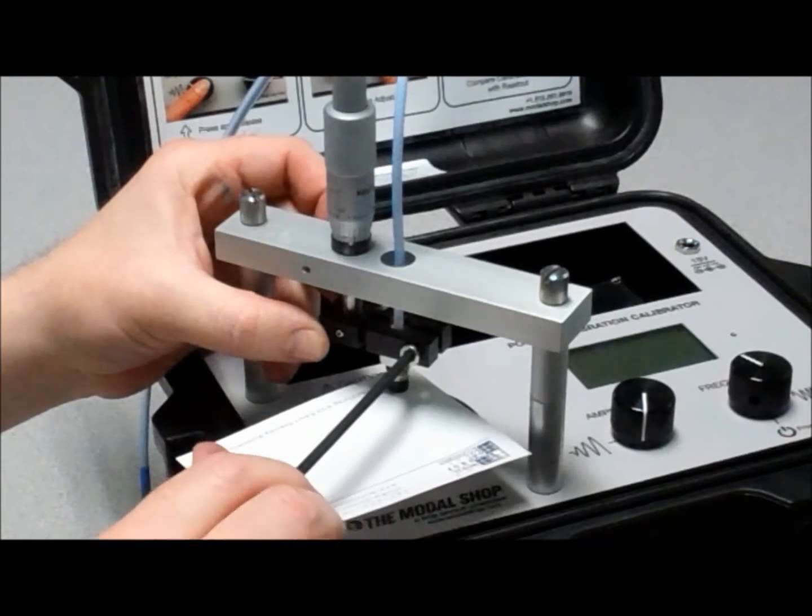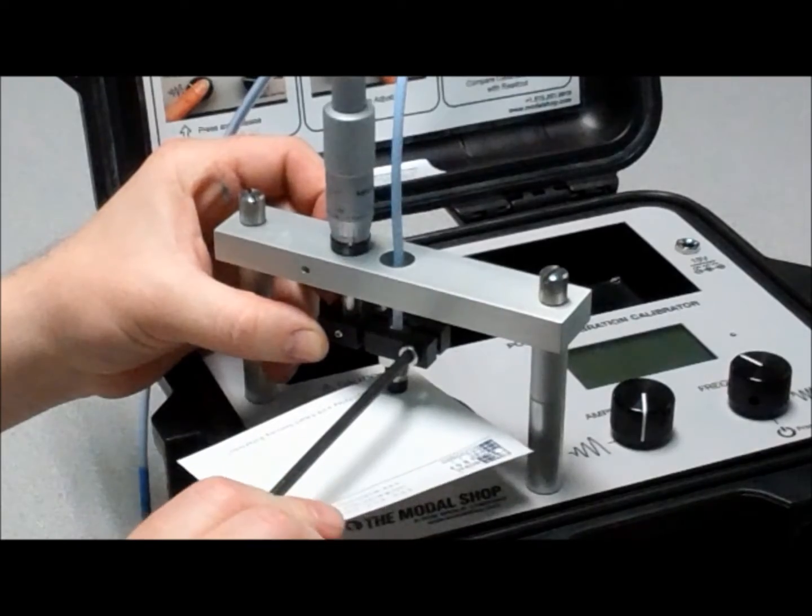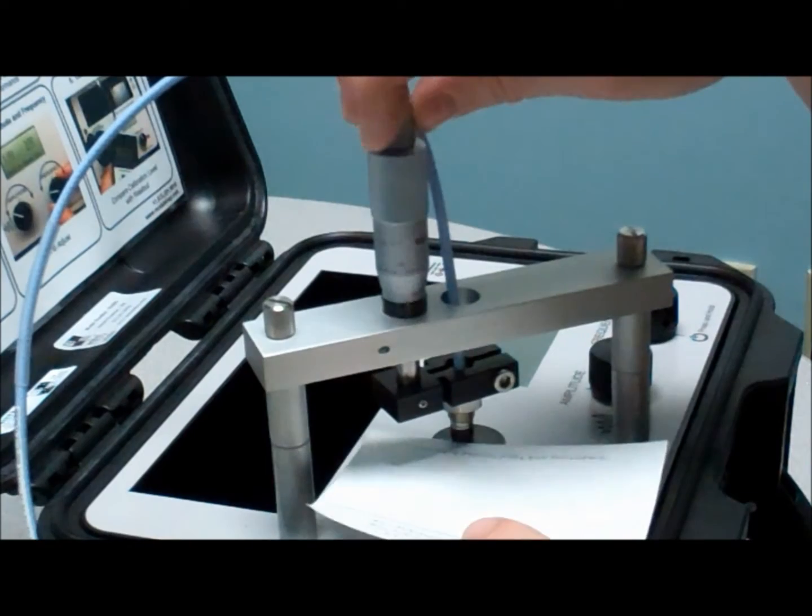To properly secure probe alignment over the target, tighten both the set screw against the micrometer on the left and the cap screw against the probe on the right.